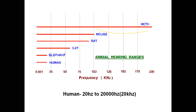Humans' hearing ability is 20 Hz to 20,000 Hz, that is 20 kHz. But there are animals which can hear more than 20 kHz — like cats, rats, and mice — and a few animals which can hear less than 20 Hz, especially the elephant and whales. Whales can listen to even 7 Hz; it reaches to that level.